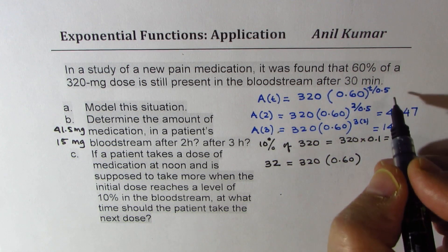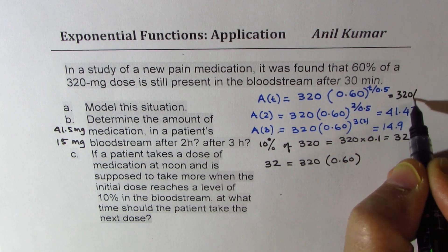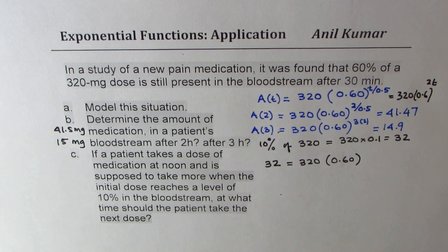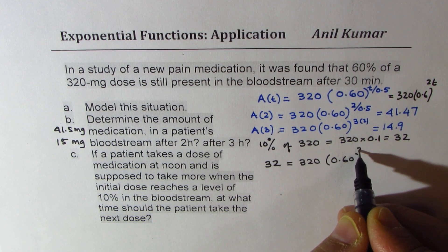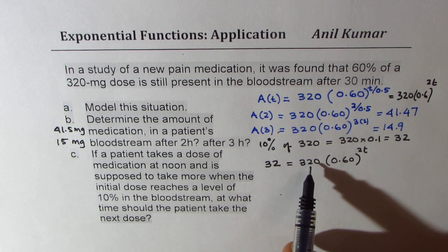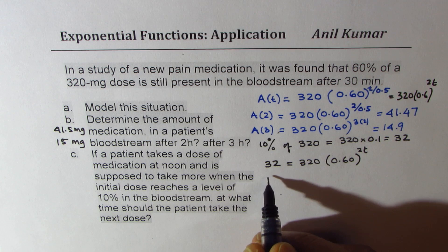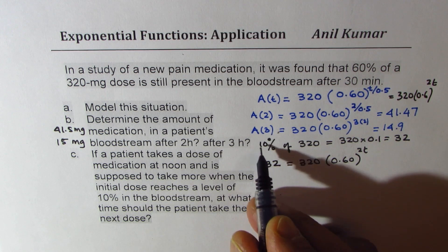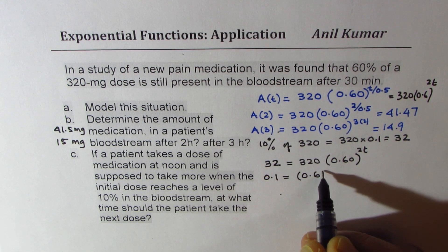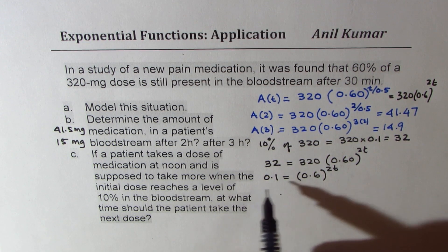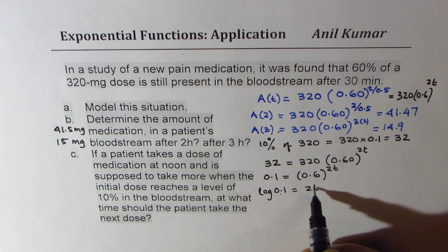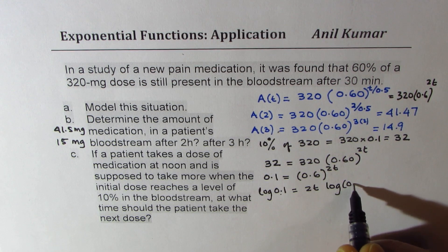Now we want to find T. We can write this as 320 times 0.6 to the power of 2T, since dividing by 0.5 is like multiplying by 2T. If I divide both sides by 320, I get 0.1, which is 10%. So we get 0.1 equals 0.6 to the power of 2T. Now we can take the log of both sides, giving us: log(0.1) equals 2T times log(0.6).